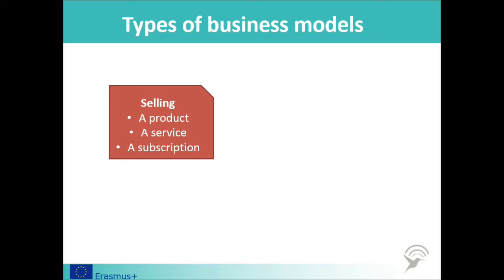When selling a subscription, customers pay a regular recurring fee and may receive regular product upgrades. This type of model is well suited to companies selling information or providing software and to online services. The licensing model, which is popular among inventors, involves lower risk but also lower rewards. An inventor may have a patent for their invention and, although they may not wish to develop it into a product themselves, they may sell the rights to a company who could then try to develop the innovation into a commercial success.